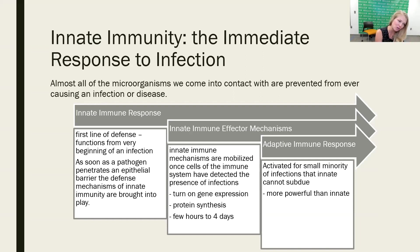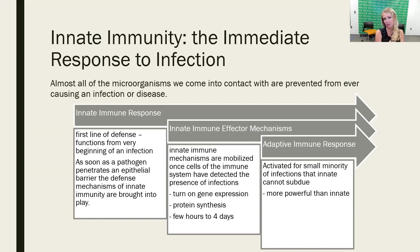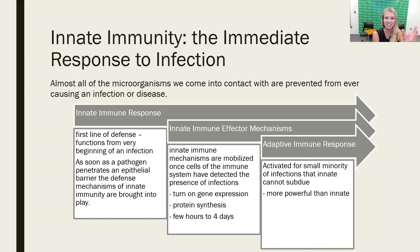If for whatever reason the innate immune system is unsuccessful and is overrun, that's when the adaptive immune system can kick in. But even once the adaptive immune system is going, there are still mechanisms of the innate immune system carrying on. All things work in concert at the same time with each other.